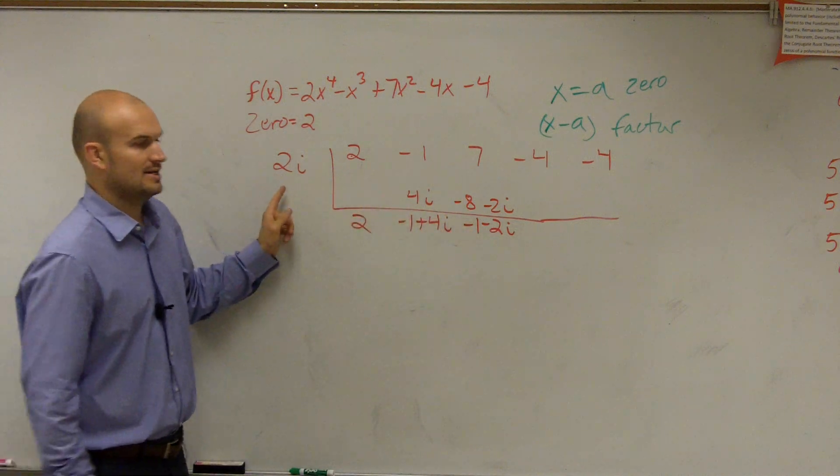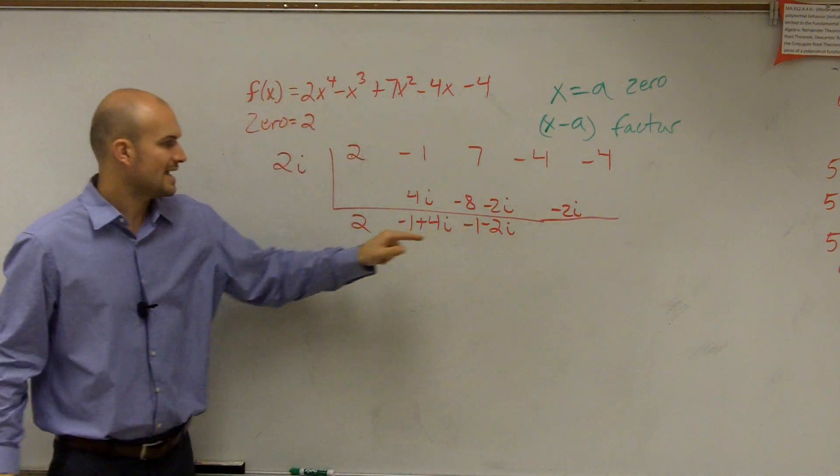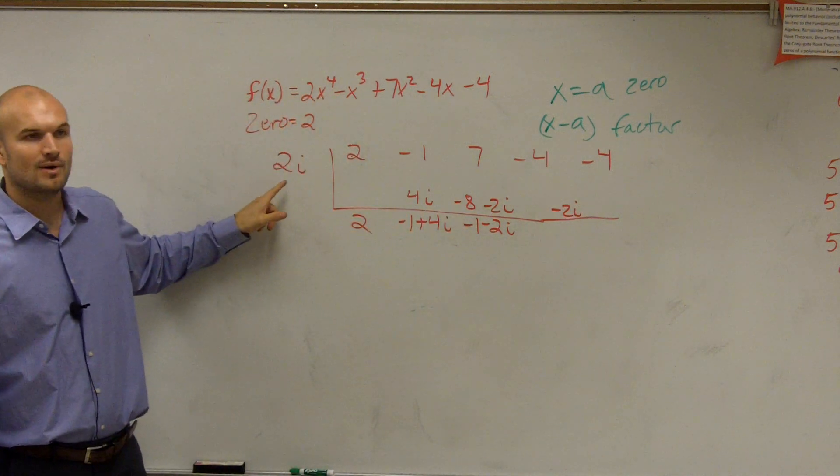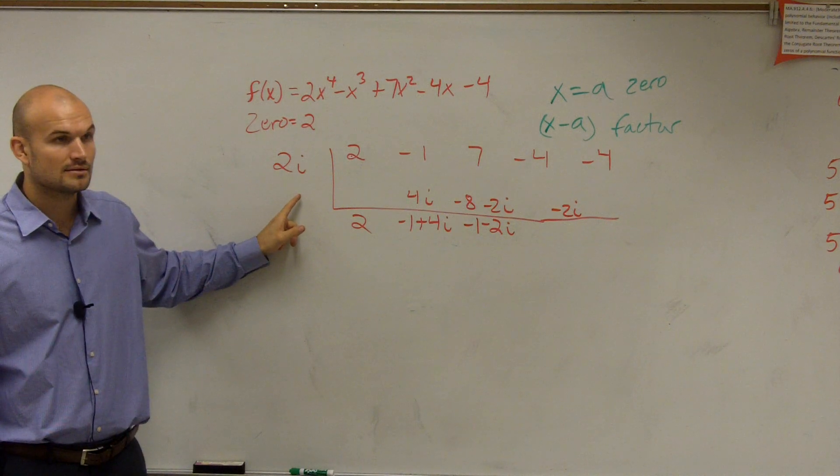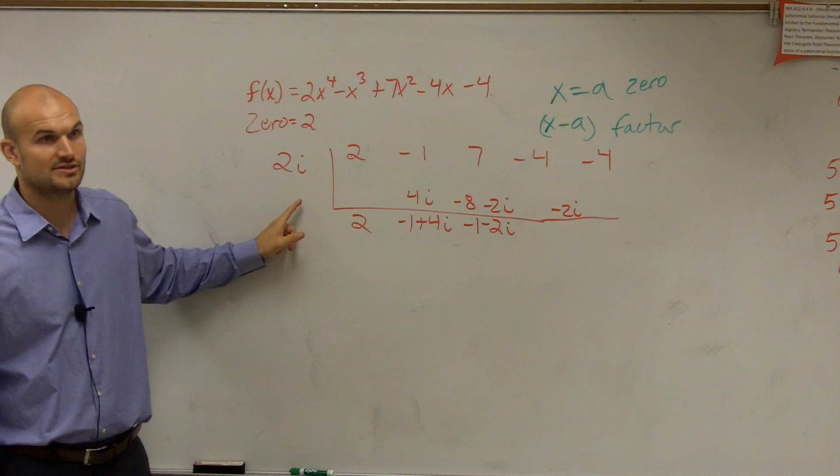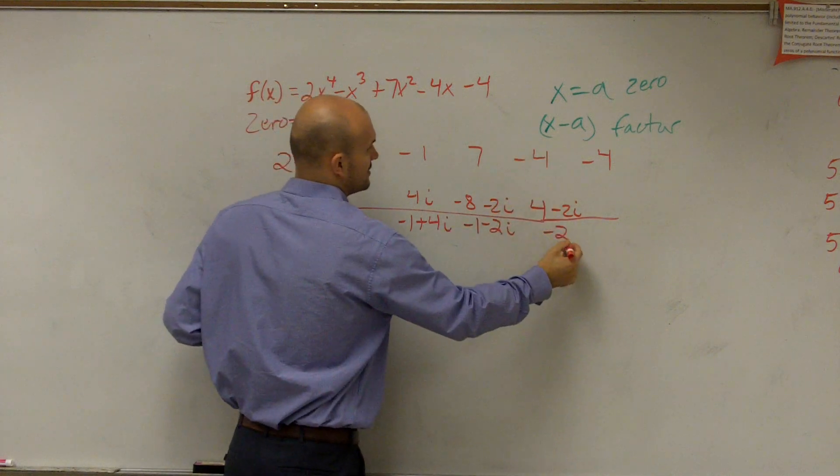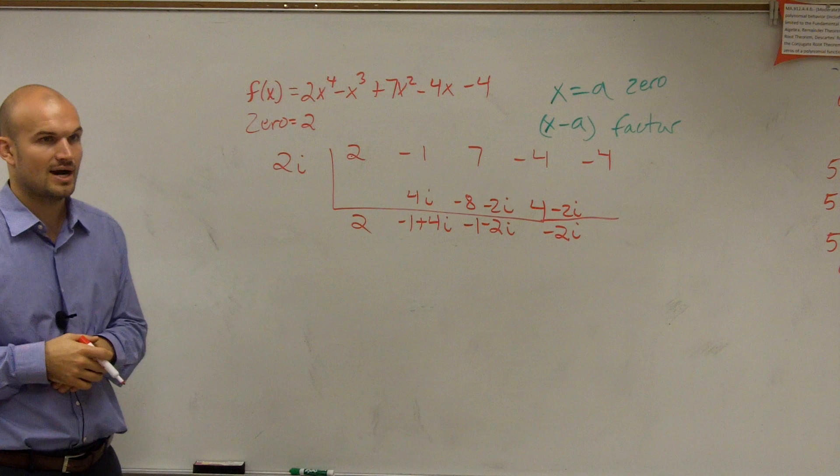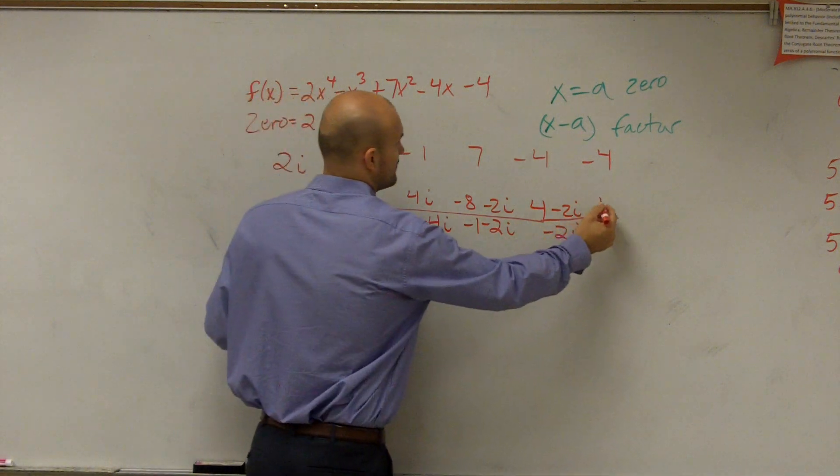Negative 1 times 2i is a negative 2i. Negative 2i times 2i is a negative 4i squared. i squared is negative 1. Negative 1 times negative 2 is positive 4. That just gives you negative 2i. Negative 2i times negative 2i is going to be a negative 4i squared, which gives you a positive 4.